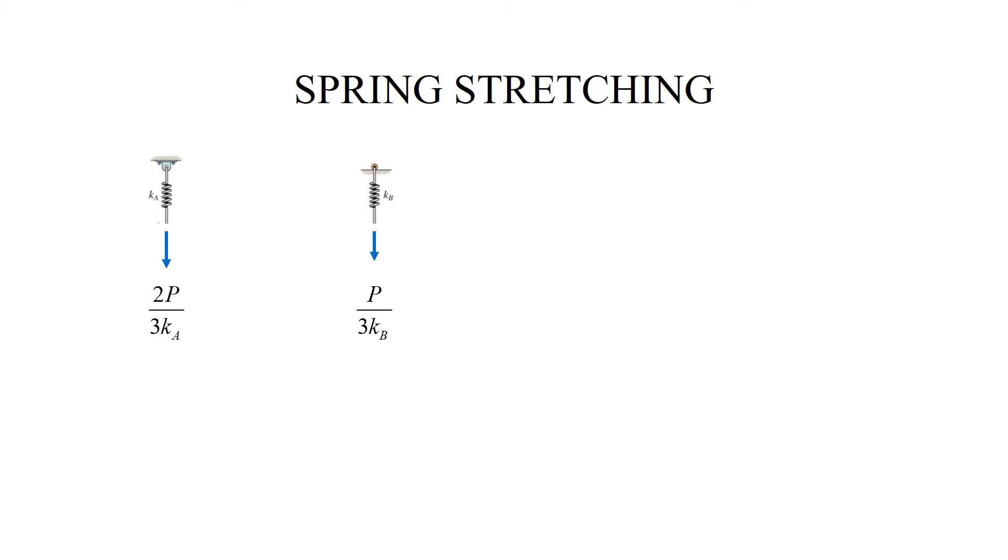Let me think about spring stretching. So in this mode the original beam does not deform, rather it moves as a rigid body and this rigid body motion is controlled by the deflection 2P over 3KA on this end and P over 3KB on this end. And I am interested in the deflection at the point C and I call it V sub S of L.